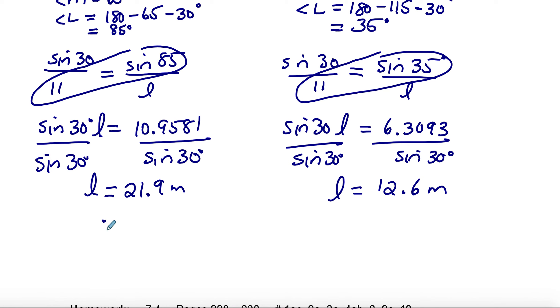Finishing off a question like this, I would need two therefore statements. Angle M might have been 65, L was 85, and side L 21.9. Or angle M is 115, angle L was 35, and side L is 12.6 meters.